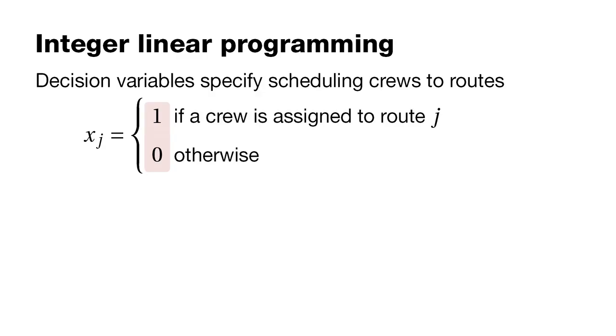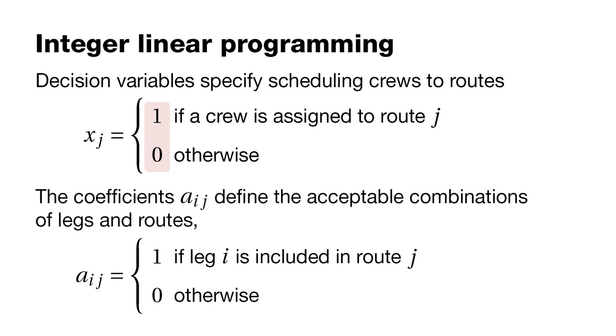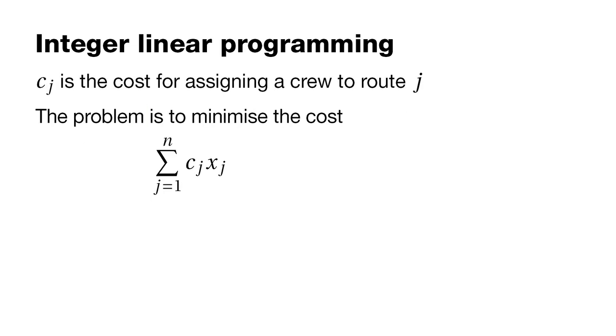In integer linear programming, binary or decision variables are often used. These variables take values 1 or 0. In a lot of problems, the variables are integers, and in particular, they're 0 or 1. Should a certain connection be turned on or off? Should a particular crew member travel on this arc or not? It's a decision that you can turn on or off.